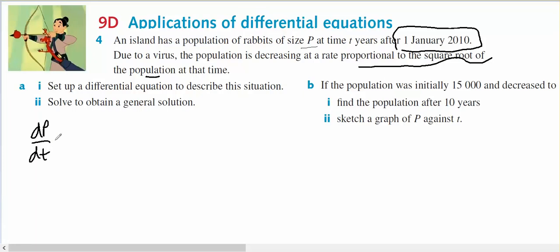So dp/dt, where p is the population, is going to vary with some constant of proportionality times the square root of p, which means dp/dt equals k root p. So I've set up the differential equation.